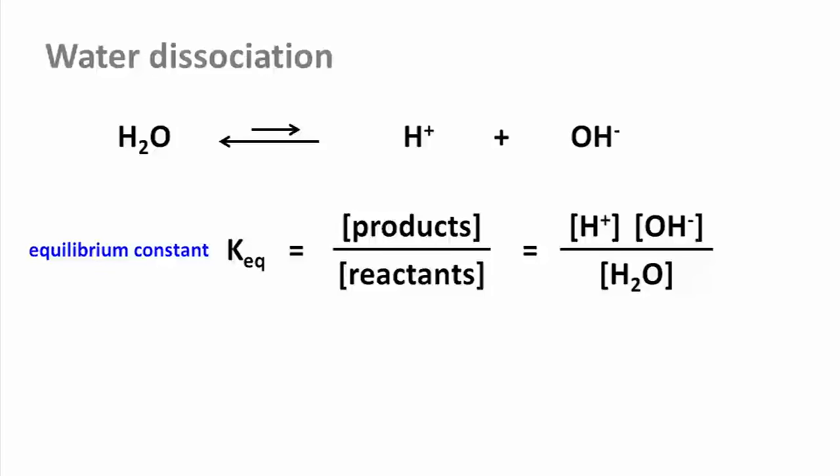This equilibrium constant has been measured to be 1.8 times 10 to the minus 16 molar. We also know that the concentration of water is 55.5 molar. If that sounds weird, consider that a liter of water is 1 kilogram, or 1000 grams, and a mole of water is 18 grams according to the molecular weight. That means that there are, in fact, 55.5 moles of water in every liter.